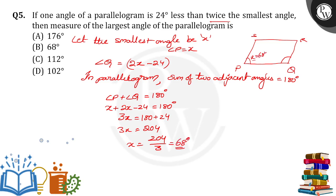So angle P value is 68, and what about angle Q? 2X minus 24 means 2 times 68 minus 24.